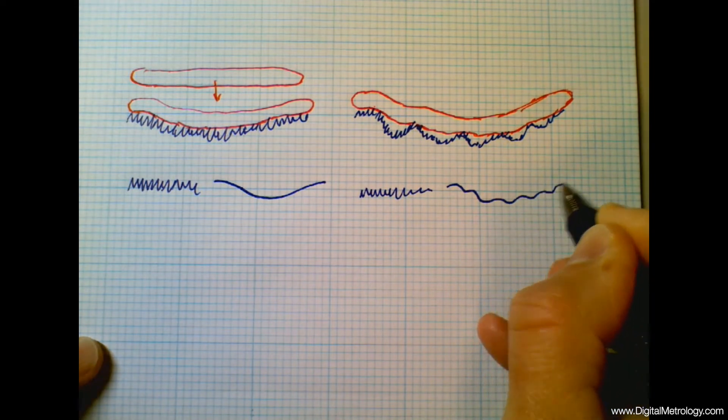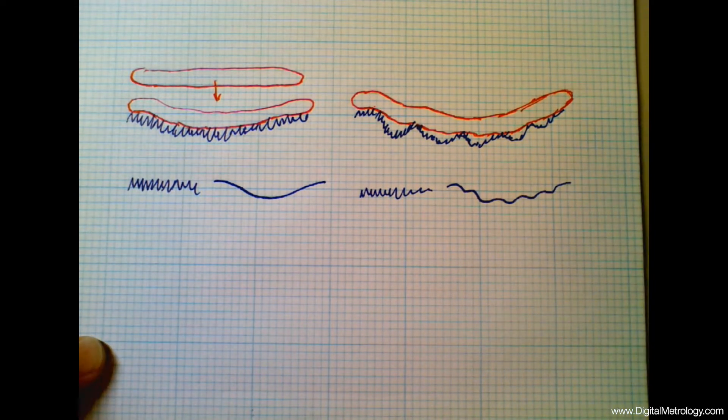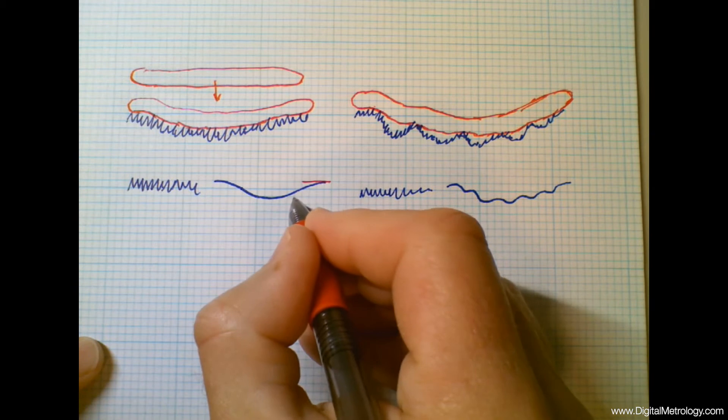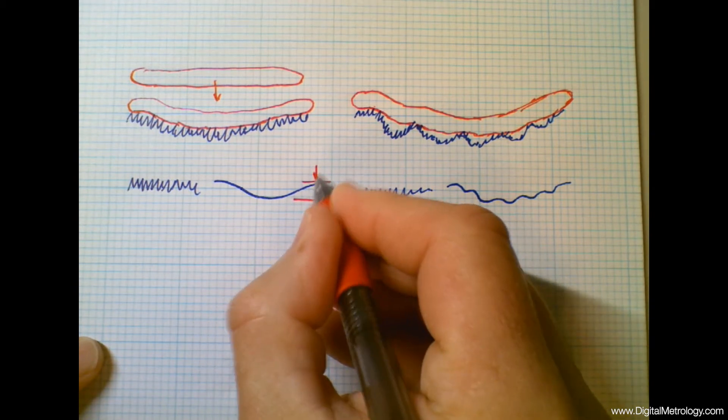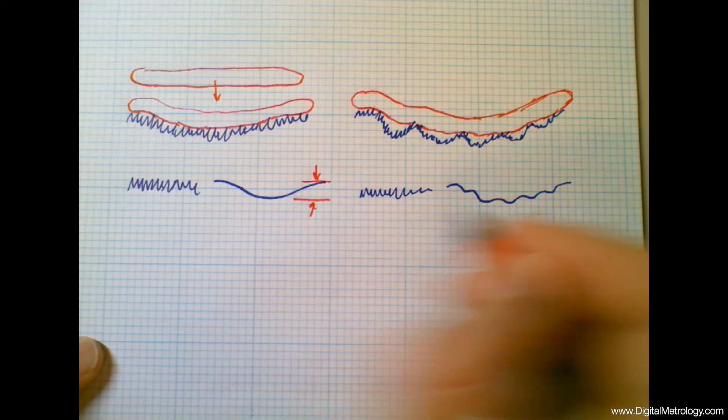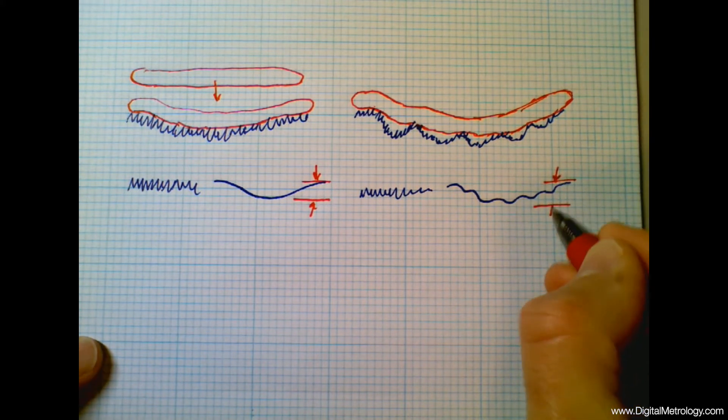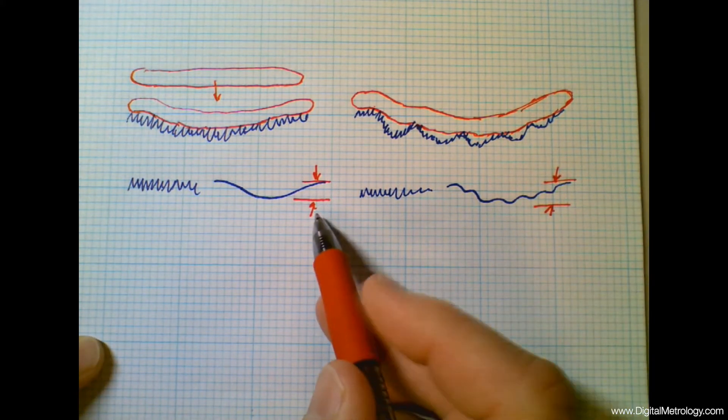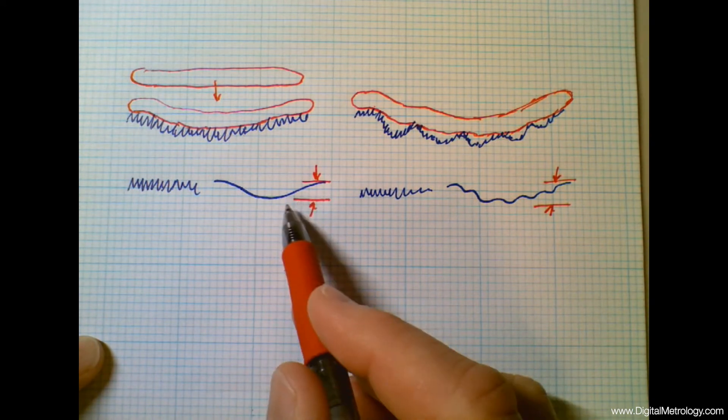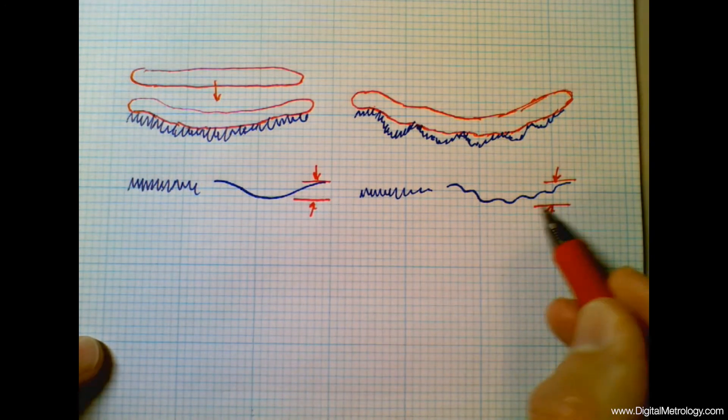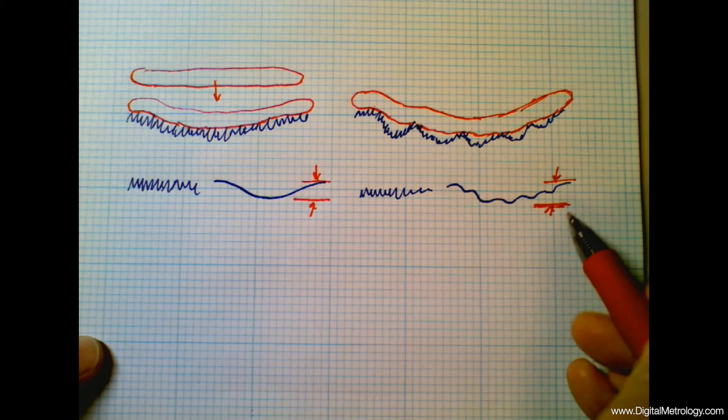The bad thing that can happen is that the total height of this long wavelength straightness or flatness or waviness, whatever you choose to call it, might be the same height on both sides. We have parts that have some amount of smile shape that seal and other parts with the same amount of smile shape that leak.